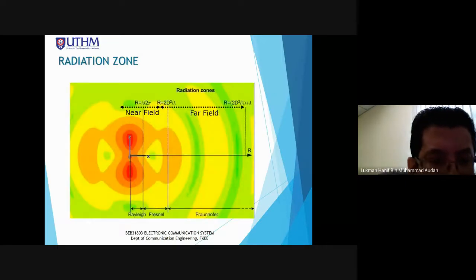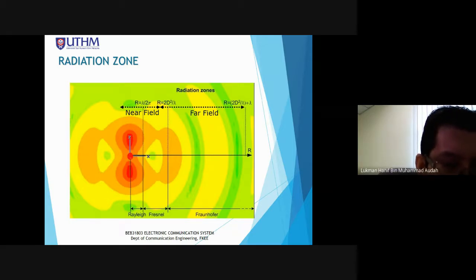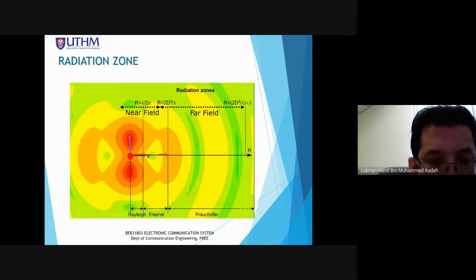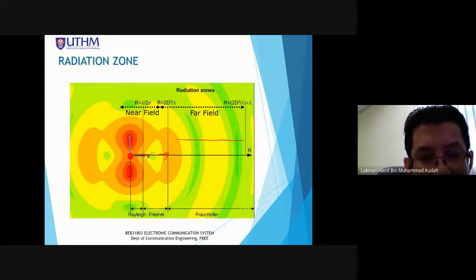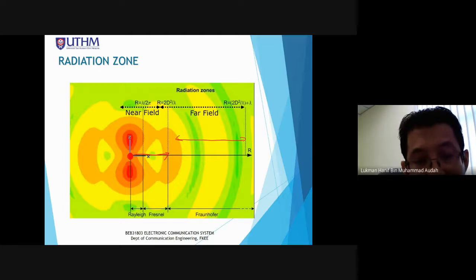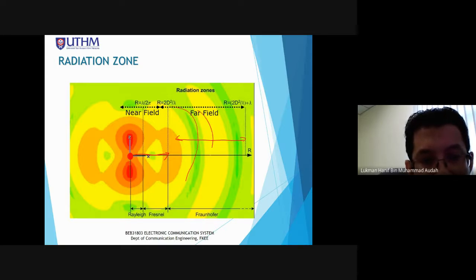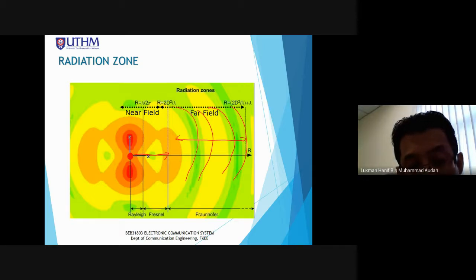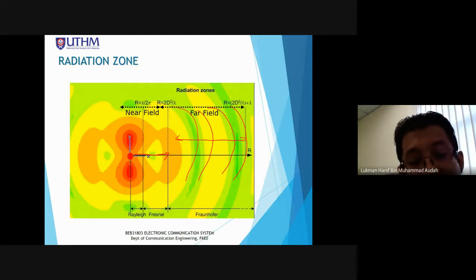Looking at the diagram: the center is the antenna region. From the antenna, at distance 2D²/λ and beyond is the far field region. In this region, the wave does not reflect back to the antenna — it continues forward towards the receiver.